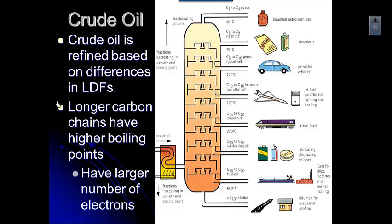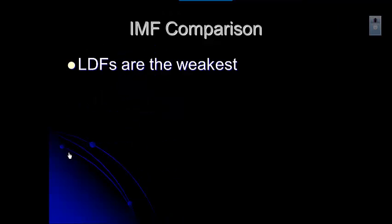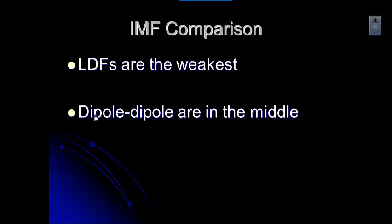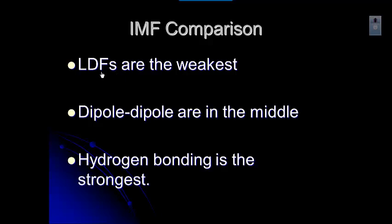So let's compare these. LDFs are the weakest. Everything has LDFs. Dipole-dipole are in the middle in terms of their strength. They are the ones that either are bent, trigonal pyramidal, or have different atoms around the outside. And then the strongest is the hydrogen bonding. And hydrogen bonding are atoms that have hydrogen bonded to fluorine, hydrogen bonded to oxygen, and hydrogen bonded to nitrogen. So we're going to look at how to compare the three of these and figure out which intermolecular forces that different molecules have.